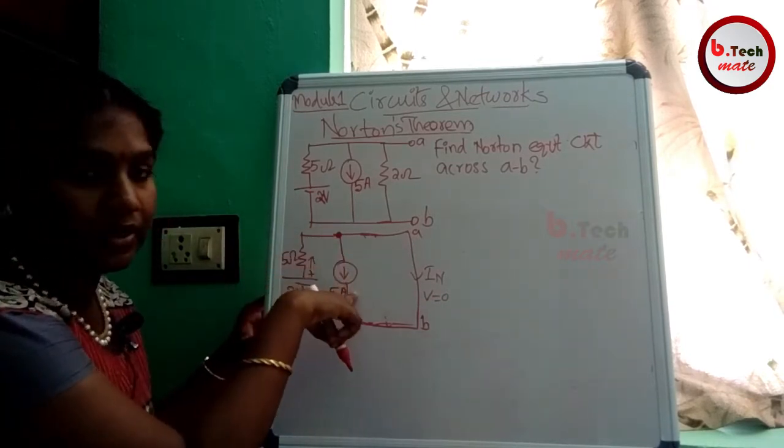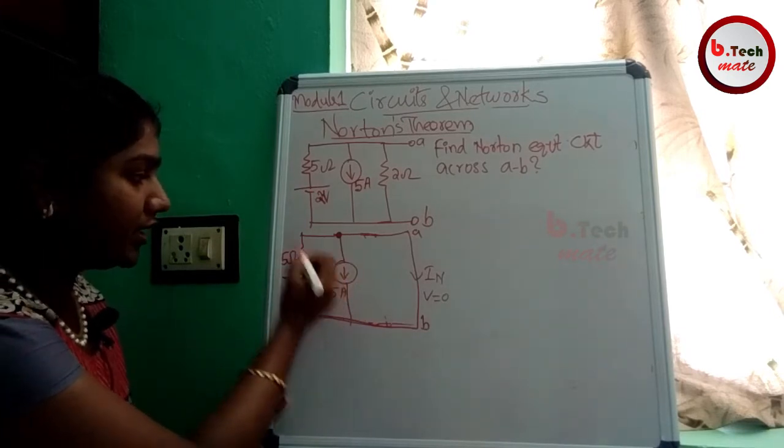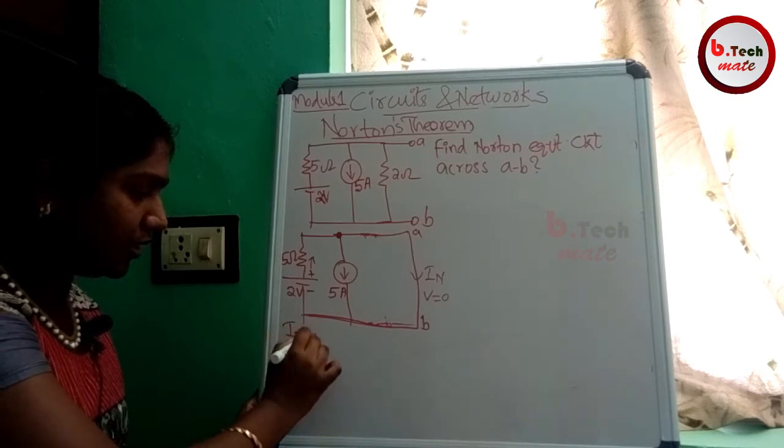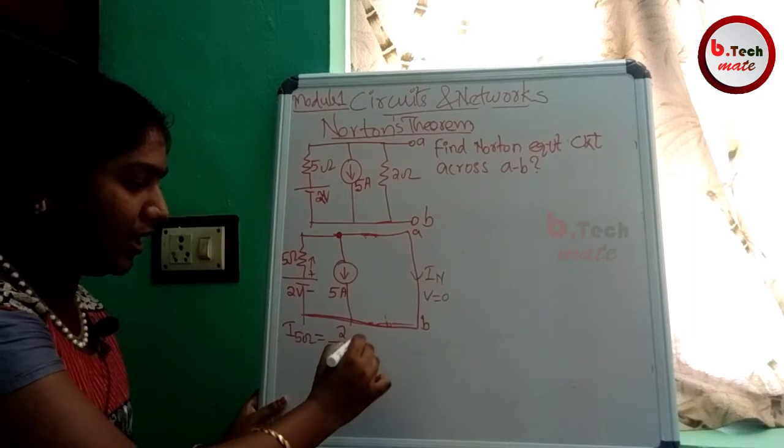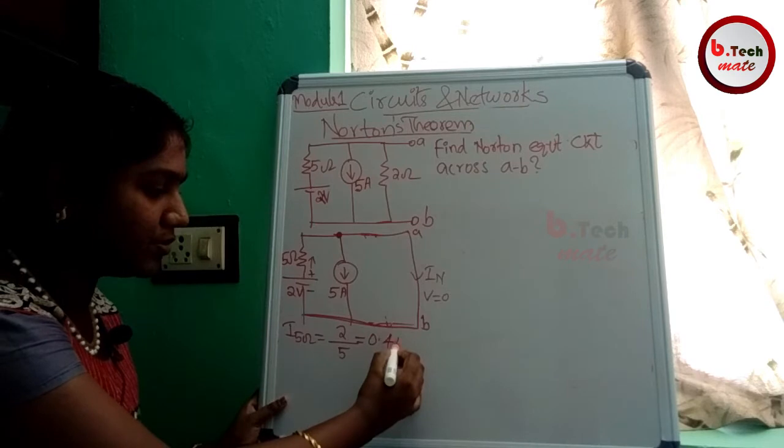So this is the source, this source is 5 amps. We will divide the source here. 5 ohms. The voltage is 2 divided by 5, V by R. 2 by 5 is 0.4 amps.